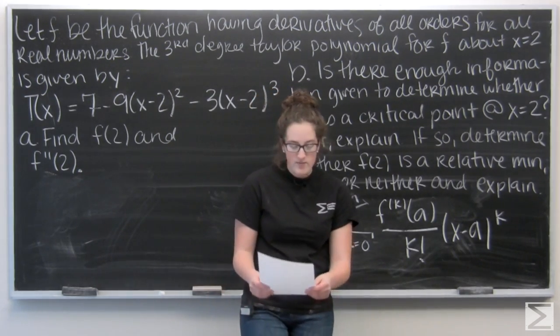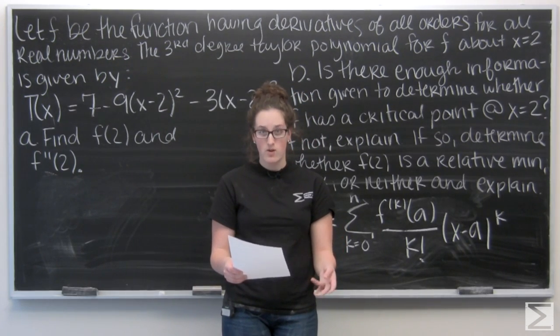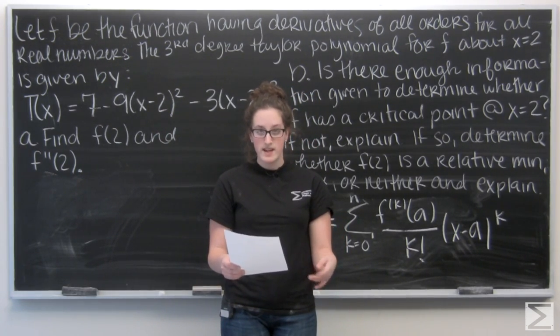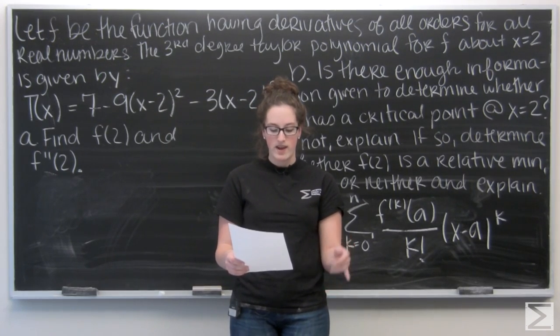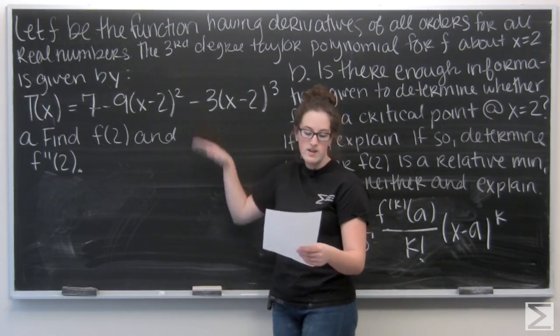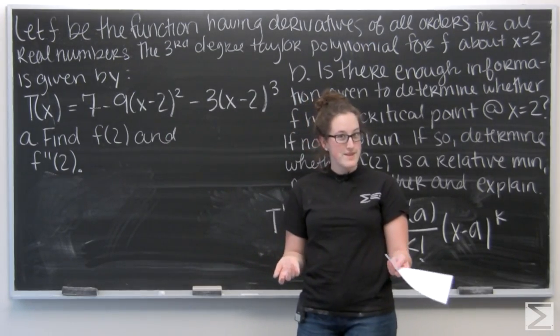So, let f be a function having derivatives of all orders for all real numbers. The third degree Taylor polynomial for f about x equals two is given here. Okay, doesn't sound that bad.